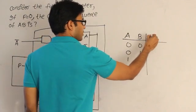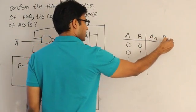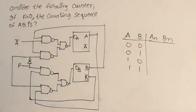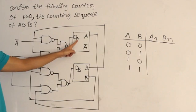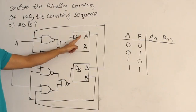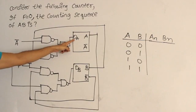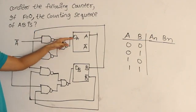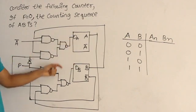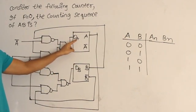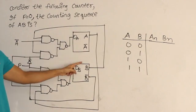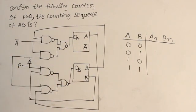Given the current state, I have to find out An and Bn — the next states. Since it is a D flip-flop, the next state depends on the D input. They didn't explicitly mention it but it is written as D flip-flops. D flip-flops work such that whatever input is applied, after one clock that input appears at the output. Therefore An equals DA and Bn equals DB.